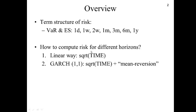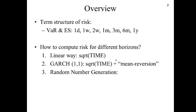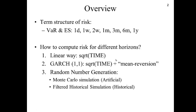The square root of time rule is what we used in RiskMetrics. We also learned how to scale the GARCH volatility by using the square root of time plus some mean reversion parameter that depends on alpha and beta. In this chapter we're going to learn how to generate random numbers to simulate future scenarios of the returns, hence future scenarios of risk — in particular Monte Carlo simulation and filtered historical simulation.